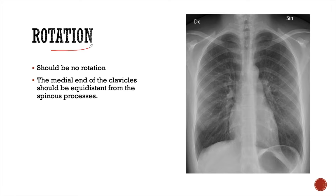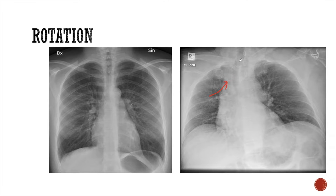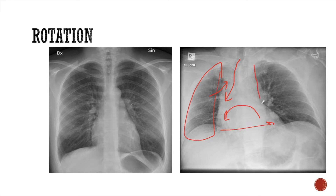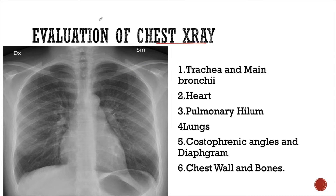The next factor to consider is rotation. There should be no rotation in an optimally centered x-ray, meaning the medial ends of the clavicles should be equidistant from the spinous process. When the x-ray is rotated, the trachea appears displaced towards one side, the heart also appears displaced, and one lung appears smaller than the other. This may obscure pathologies in that lung, so we should check for no rotation in an x-ray.